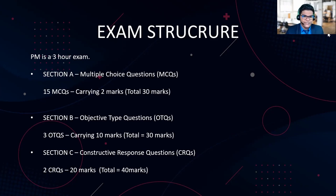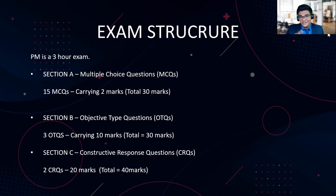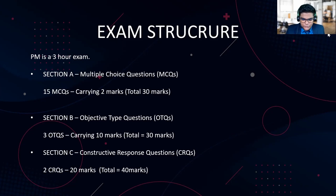Then we move on to Section B, where we have objective test questions or OTQs. You might be familiar with MCQs from various other exams. But what are OTQs? It's kind of similar to MCQs, but the only difference is that for each OTQ, you will have 10 marks available. You will be given a scenario, you will have to read through it and identify what the scenario is. After reading through the scenario, you will have to answer five multiple choice questions relating to that particular scenario — each MCQ carrying two marks. So five times two is 10. We will be practicing a lot of MCQs as well as OTQs throughout our sessions.